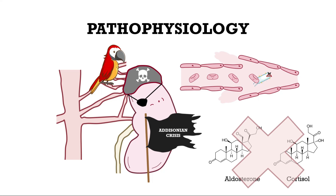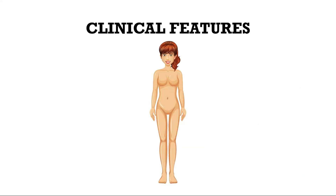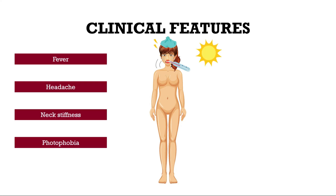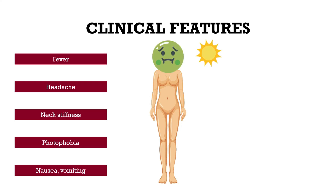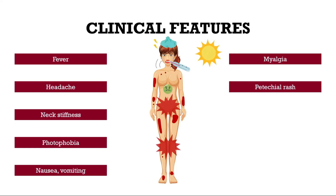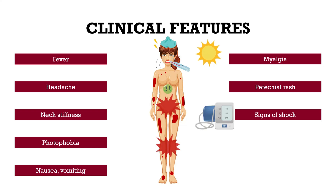Typical clinical features could be fever, headache, neck stiffness, photophobia, nausea, vomiting, muscle aches and pain, a petechial rash mostly on the trunk and legs, and in severe cases even purpura fulminans with extensive necrosis of the skin. Signs of shock include hypotension, tachycardia, tachypnea, and even loss of consciousness.